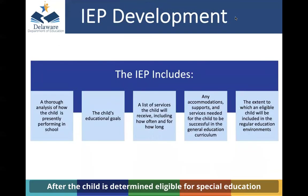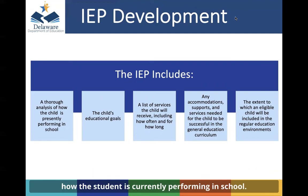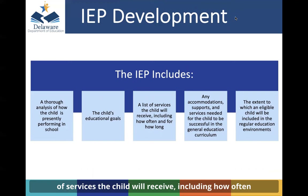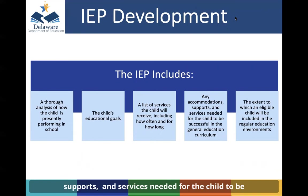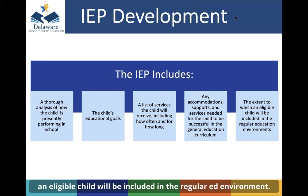After the child is determined eligible for special education services, the IEP team is responsible to hold a thorough analysis of how the student is currently performing in school, develop the student's educational goals, determine a list of services the child will receive including how often and how long, determine any accommodations, supports, and services needed for the child to be successful in the general education curriculum, and the extent to which an eligible child will be included in the regular education environment.